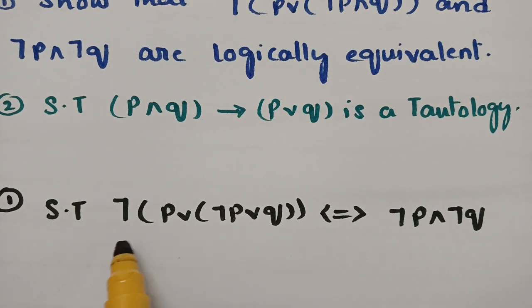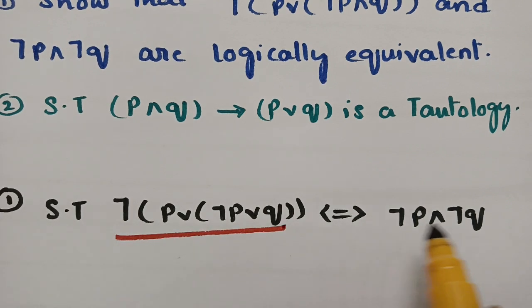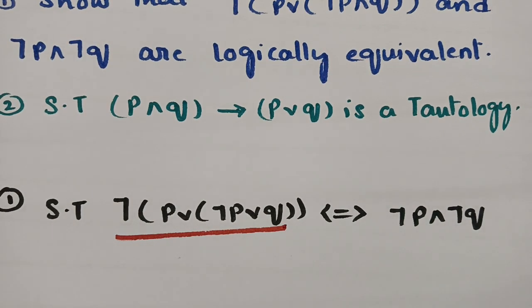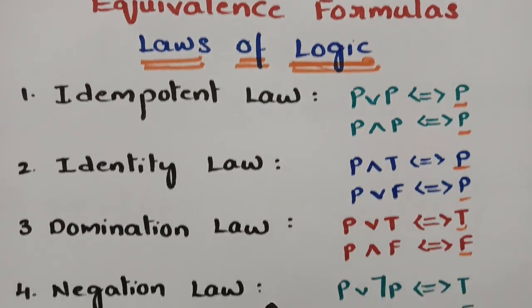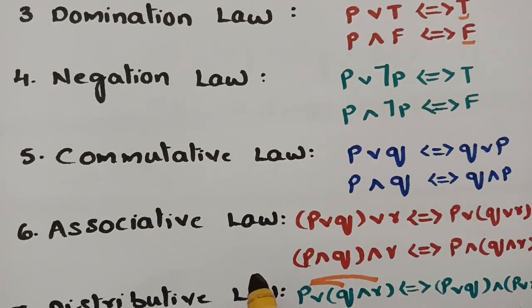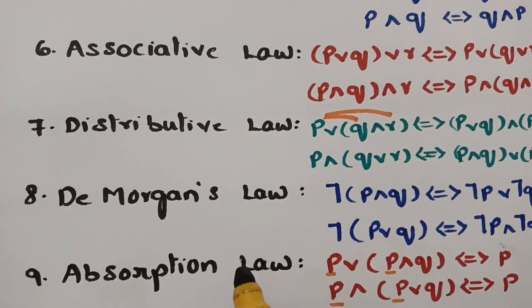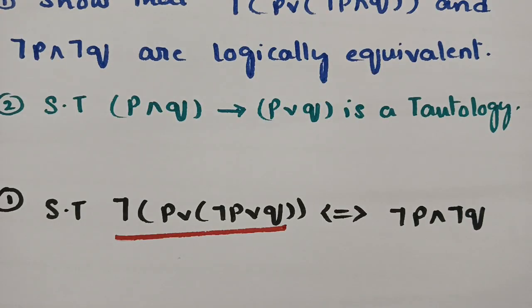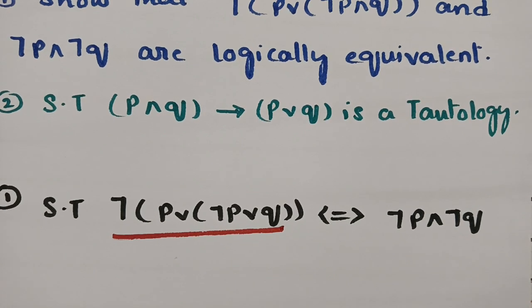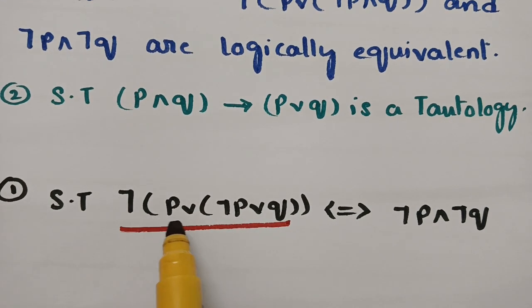The first question has LHS: negation of (P or (negation P or Q)). I have to show the RHS using equivalent formulas. The relevant equivalent formulas are: idempotent law, identity law, domination law, negation law, commutative law, associative law, distribution law, De Morgan's law, absorption law, and double negation law. These are the 10 formulas I am going to apply to get the solution.